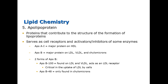Apolipoproteins contribute to the structure of lipoproteins, serve as cell receptors, and act as activators or inhibitors of some enzymes. ApoA1 is the major protein on HDL — the good cholesterol; a helpful mnemonic is that A1 steak sauce is yummy and HDL is good. ApoB is the major protein on LDL — the bad cholesterol — as well as on VLDL and chylomicrons. There are two forms: ApoB100 is found on LDL and VLDL, while ApoB48 is found on chylomicrons, which are large.